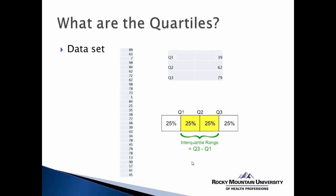That gives us a sense of how dispersed the scores are. The larger the interquartile range, the more dispersed scores are in that middle 50% of the distribution; the narrower it is, the less dispersed. An interquartile range of 40 indicates the dispersion in the middle 50%, whereas an IQR of 20 would mean narrower dispersion. The interquartile range tells us between what two scores 50% of all scores lie — in this case, between 39 and 79.